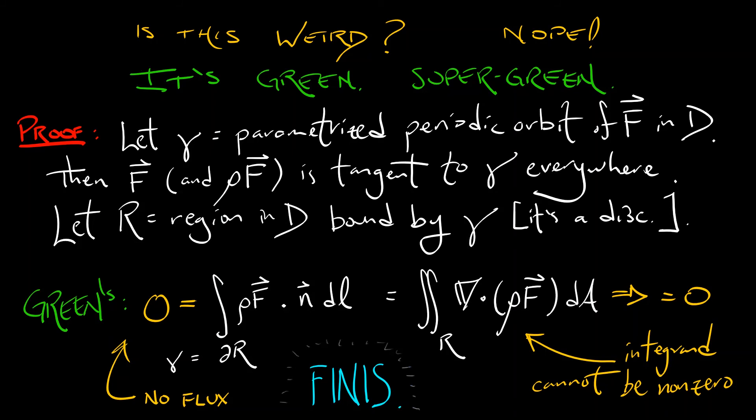as the divergence only takes on one sign. So maybe it's like all positive and then zero along a point or a curve or something like that. This proof would still hold in that case. That's a really nice application of Green's theorem.